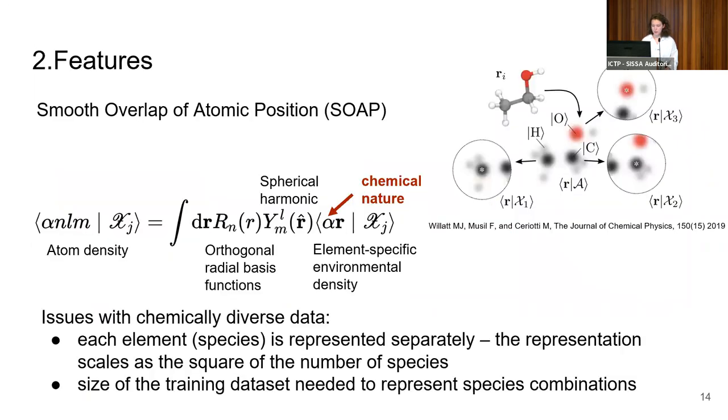Now we have our dataset. We also need to describe our data to pass it to the model. Since I'm coming from the lab where we identify ourselves as a SOAP family, I'm using SOAP descriptors, which is an atomic density-based descriptor. This descriptor treats separately every chemical element, and their feature of course scales badly with the number of chemical elements. It doesn't help that to cover all the combinatorial permutations of different species, you also need a large dataset.